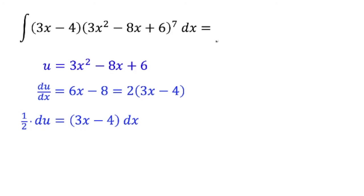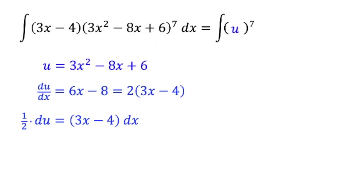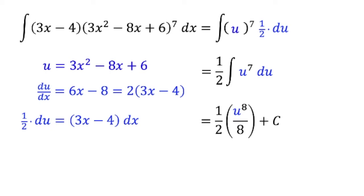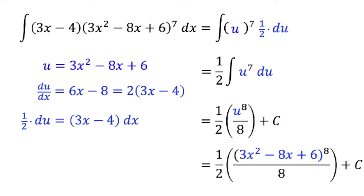Now we rewrite our original integral. We have (3x² - 8x + 6) to the 7th power — we substitute u for this term. We also have (3x - 4) dx — we substitute ½ du for this term. Pulling ½ outside the integral gives ½ times the integral of u to the 7th power du. We know the antiderivative of u to the 7th, so this equals ½ times u to the 8th divided by 8, plus constant c. Substituting back, we get ½ times (3x² - 8x + 6) to the 8th power divided by 8, plus c.